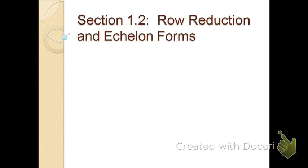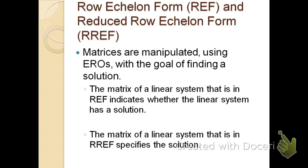Section 1.2: Row Reduction and Echelon Forms. We will now look at what row echelon form, commonly known as REF, and reduced row echelon form, or RREF, look like. Our goal is to use EROs to find if there is a solution to a system. A matrix in REF indicates whether the system has a solution, while a matrix in RREF specifies the actual solution.